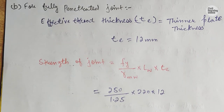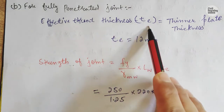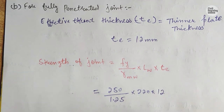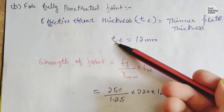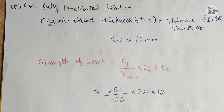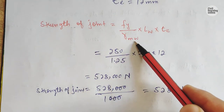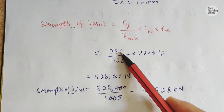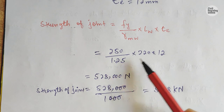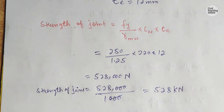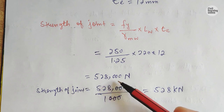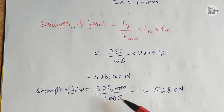Now for the second condition — fully penetrated joint. For full penetration, the effective throat thickness Te equals the thickness of the thinner plate, which is 12 mm. The rest of the data remain the same: length of weld = 220 mm, Fy = 250 N/mm², gamma Mw = 1.25. Substituting: Strength = (250 / 1.25) × 220 × 12 = 528 kN. This is our strength of joint for fully penetrated butt weld.